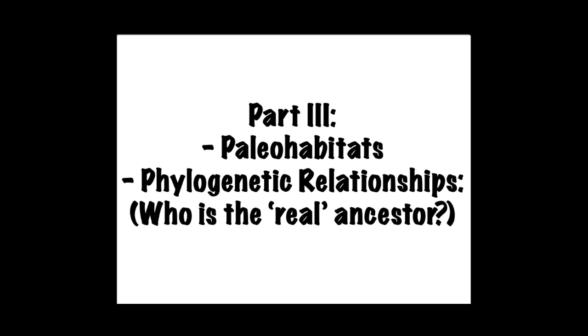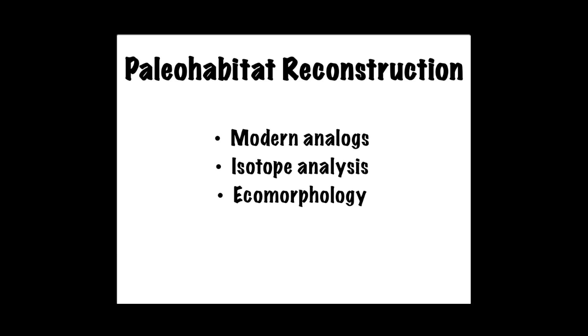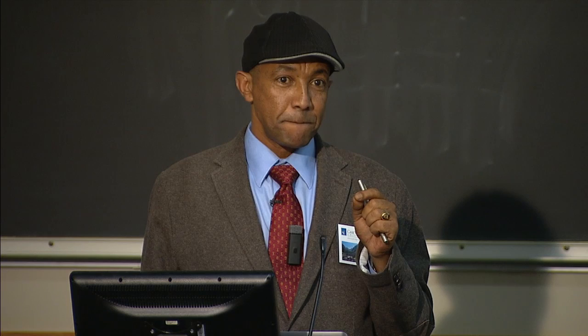Now part three: paleo habitat. This is a very important subject particularly when we talk about our own evolution, because environment plays a major role in how species form and go extinct. I'll also talk about phylogenetic relationships — which species are valid, which may not be, and the relationships between groups. First, how do we reconstruct paleo habitats? One method is looking at modern analogues, with the major assumption that if extinct and modern animals are related, the extinct ones were living and doing the same things as their modern relatives.